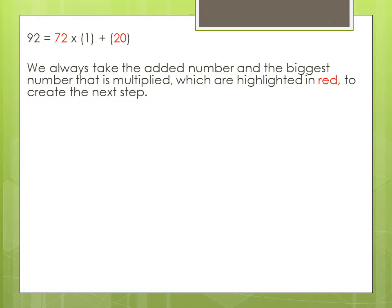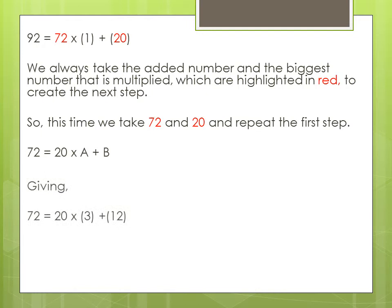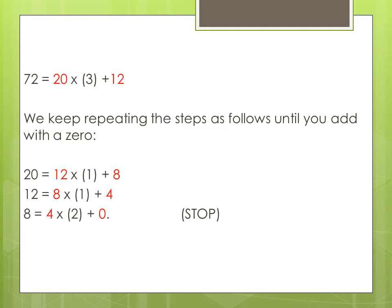So this time we take 72 and 20 and repeat the first step giving 72 equals 20 times 3 plus 12. We continue in this fashion until we add by 0 as shown.